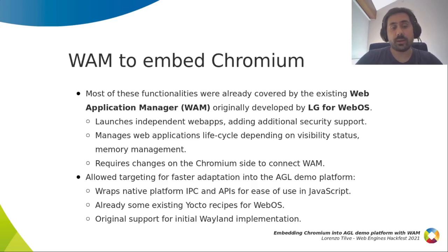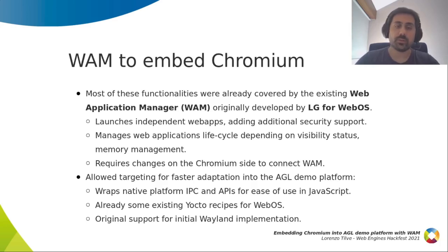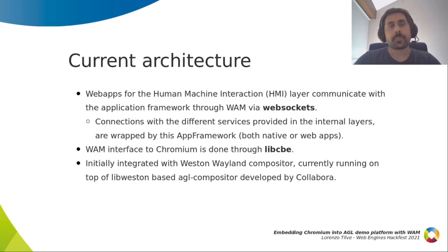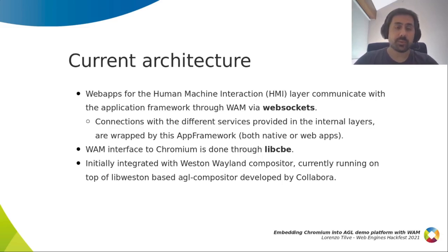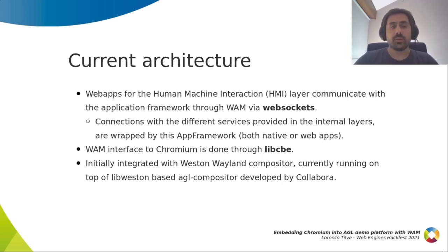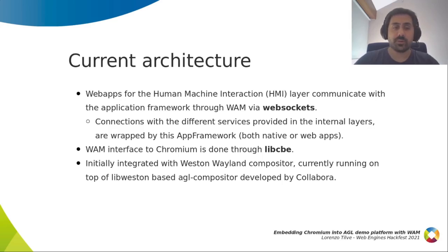Doing this made it possible to target a faster adaptation into the AGL demo platform and to wrap some existing platform IPCs and APIs for use with JavaScript. We just had to modify the existing Yocto recipes that were in place for WebOS and adapt them to AGL. It was already shipping initial support for a Wayland implementation that we were willing to use on the different hardware devices to make better use of GPU capabilities. The architecture was intended to have just on top of the human-machine interaction layer the web apps talking to WAM through WebSockets, with connections to internal layers provided by the application framework.